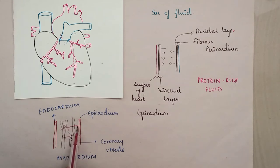Vessels supply these muscles so they can pump effectively. These vessels are called coronary vessels. We've now covered the pericardium and the layers of the heart.